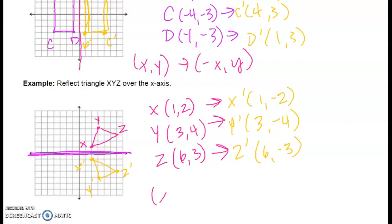When I think about my rule for flipping over the x-axis — (x, y) becomes (x, -y) — we can see that that's exactly what happened. Our x values stayed the same, but our y values switched signs.